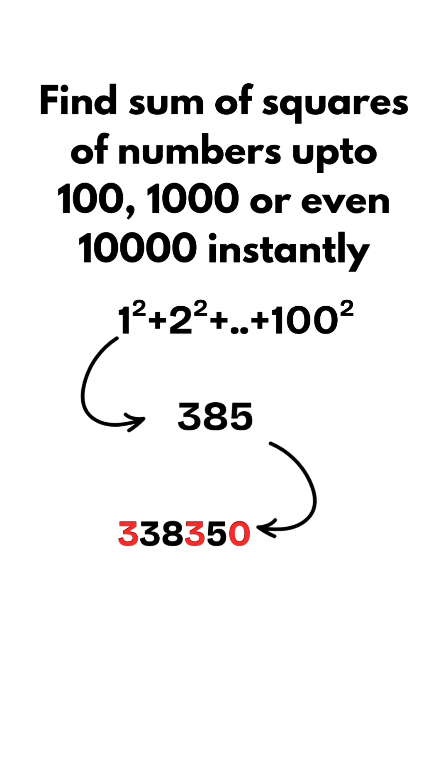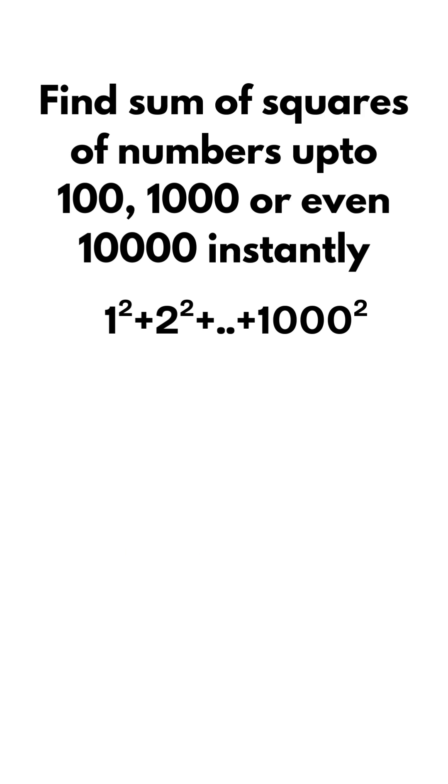What? That is interesting, right? Let's calculate sum of squares of numbers up to 1000. Let's start with 385 again. Add 2 3s at the front, add 2 3s after 8, and 2 0s at the end. It comes to 333,833,500.